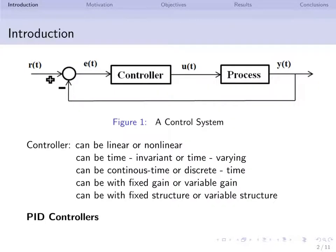Figure 1 shows a typical block diagram of a closed loop control system. Depending upon the process, the controller can be linear or non-linear, time variant or time invariant, continuous time or discrete time, fixed gain or variable gain, fixed structure or variable structure. The popularly used controllers in the industries are PID controllers.